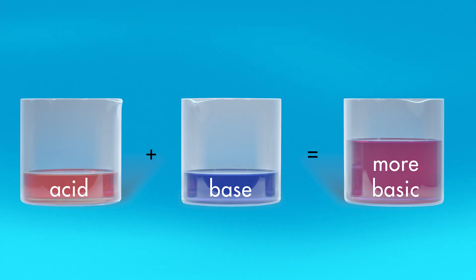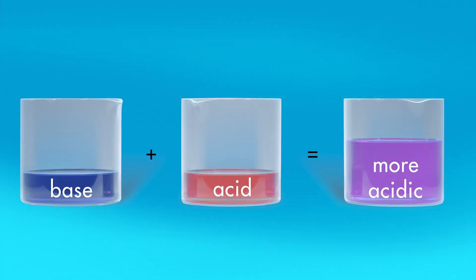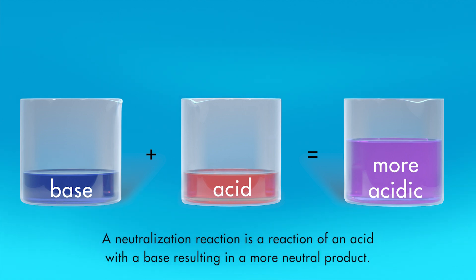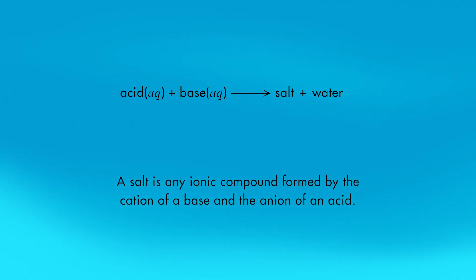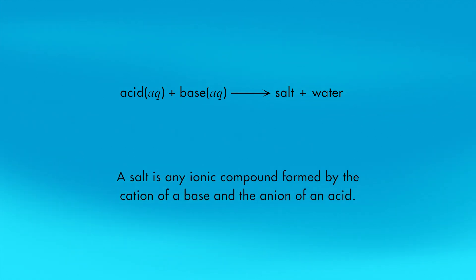When an acid and a base are mixed, they neutralize each other. Adding a base to an acid makes the acid more basic. Adding an acid to a base makes the base more acidic. The reaction of an acid with a base resulting in a more neutral product is a neutralization reaction. The products of a neutralization reaction are a salt and water. A salt is any ionic compound formed by the cation of a base and the anion of an acid.